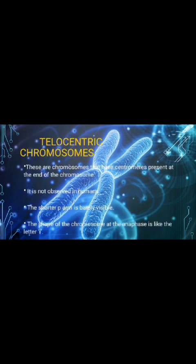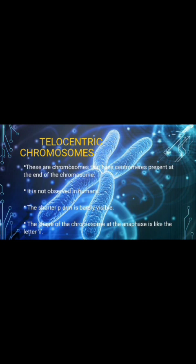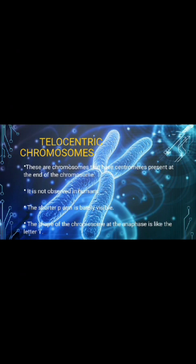Next, telocentric chromosomes. These are chromosomes which have their centromere present at the end of the chromosome. It is observed in humans, where the shorter P arm is barely visible. The shape of the chromosome at the end of the phase is like the letter I.